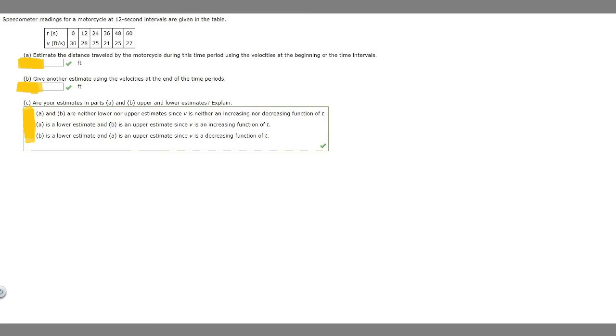In order to solve this problem, what we should first look at is the distance between each of our x values, or in this case it's t. So the distance between each of these is going to be 12. So we're going to take 12 and multiply it by each of the velocities at the beginning of the time intervals.